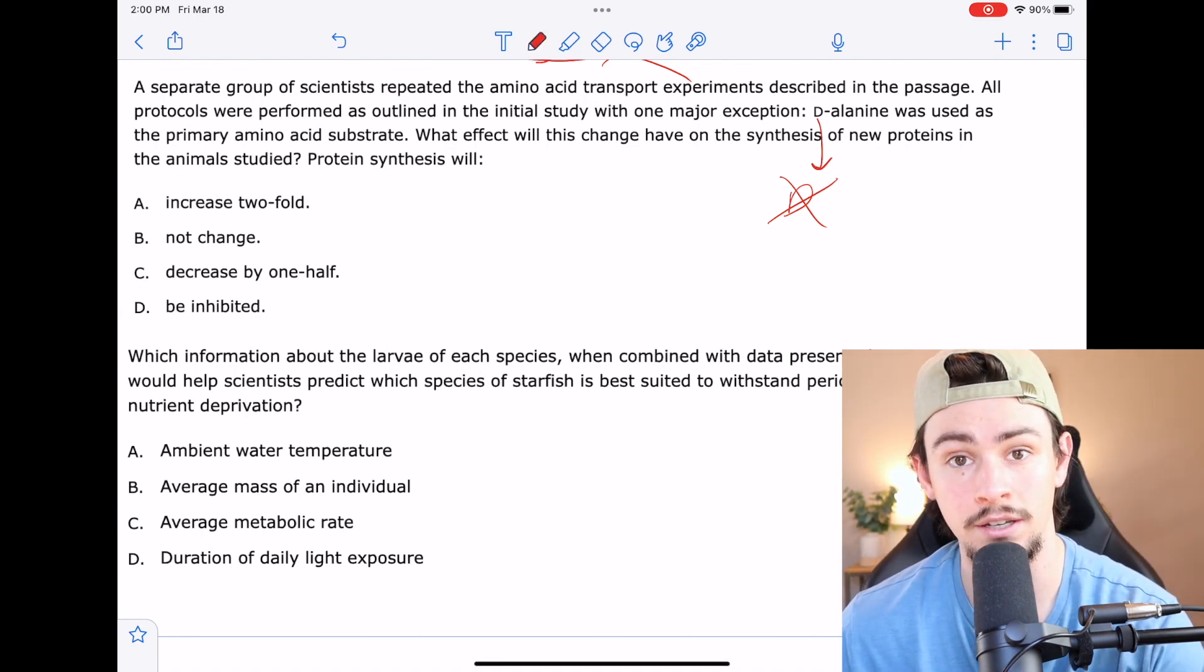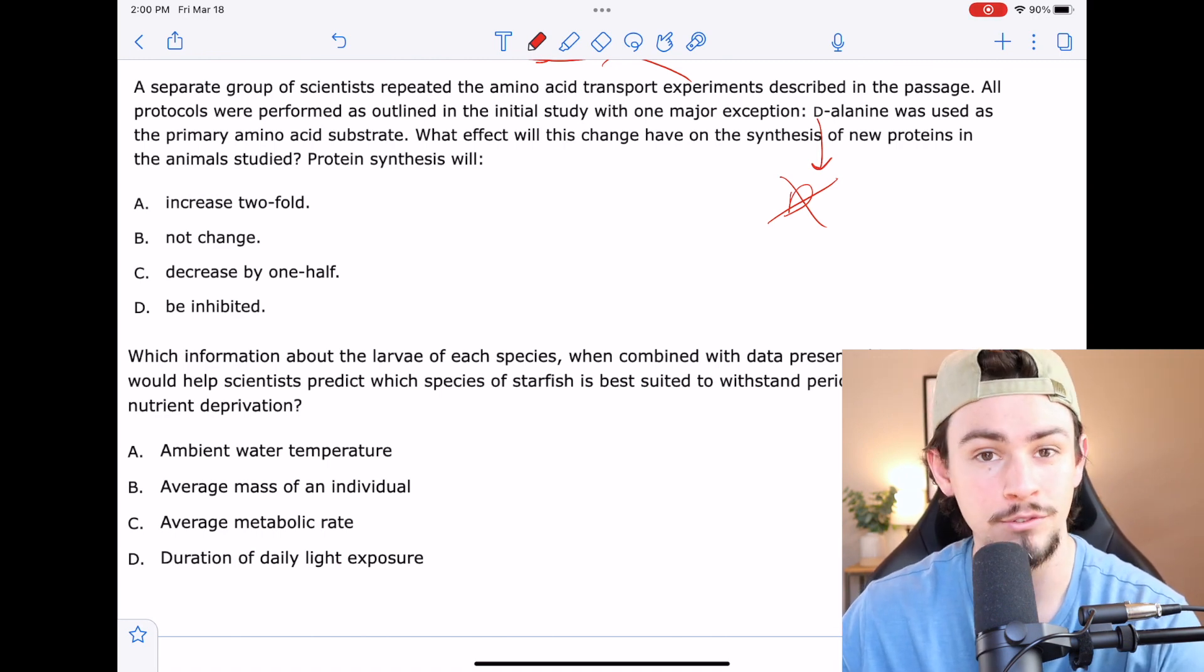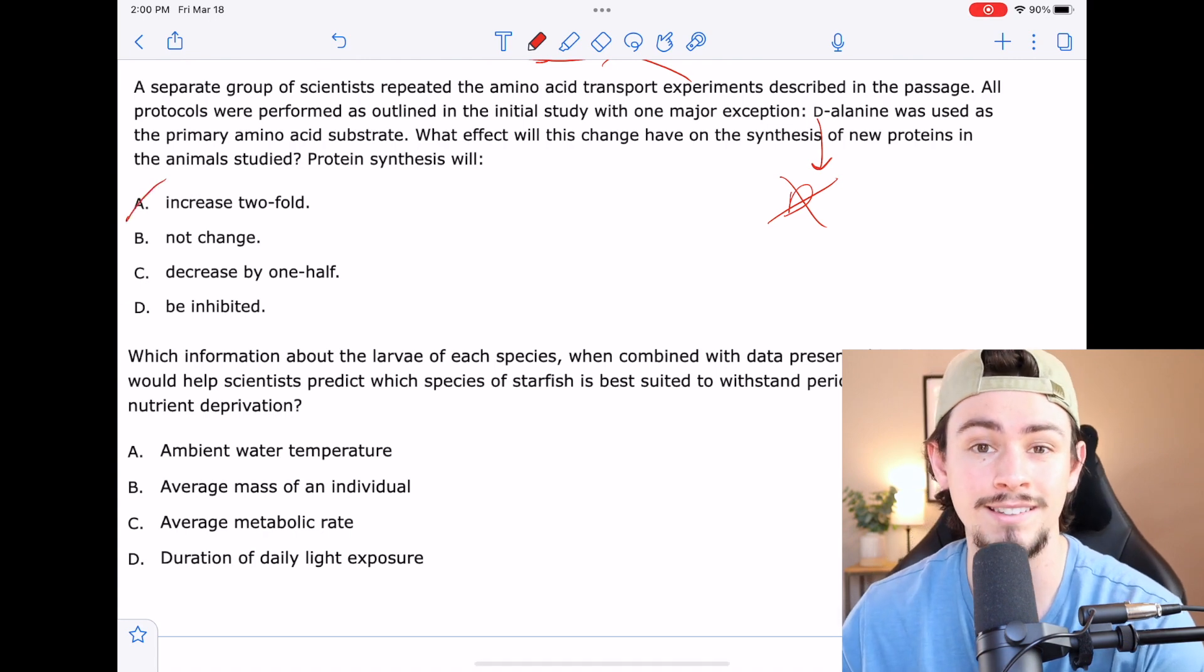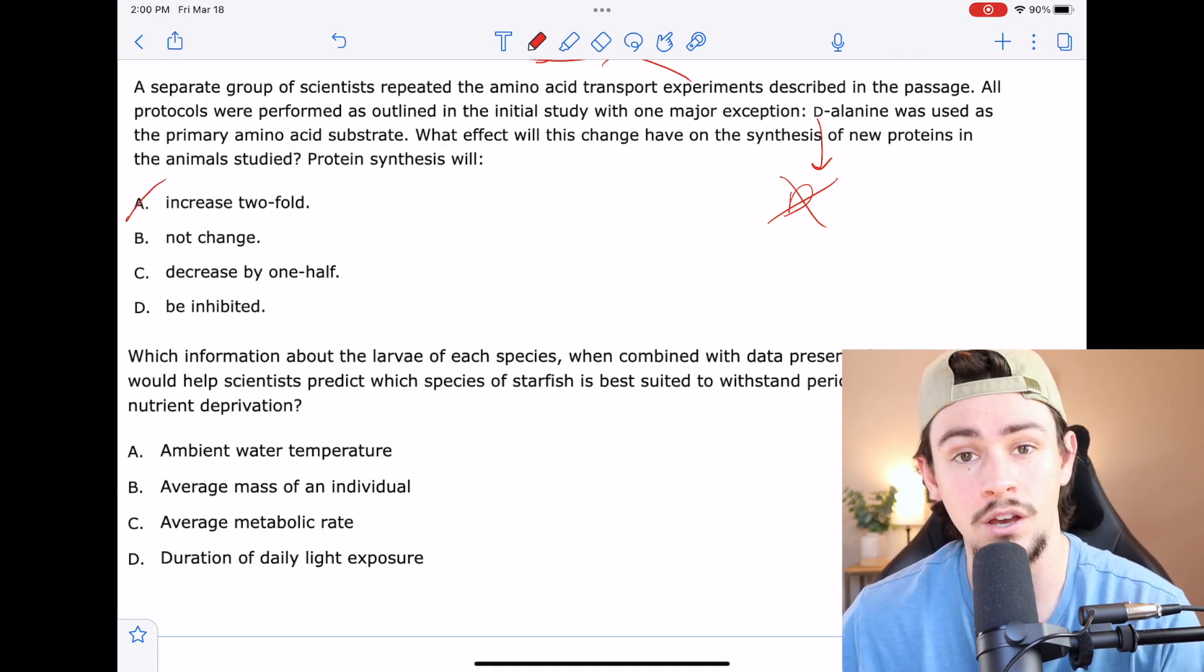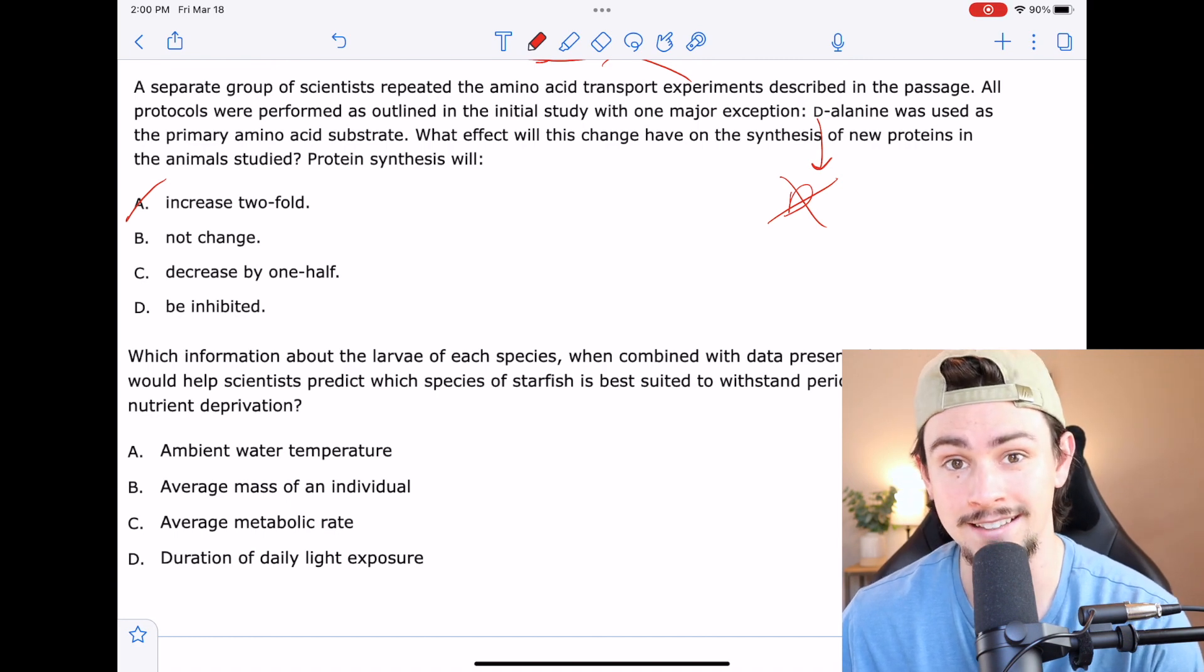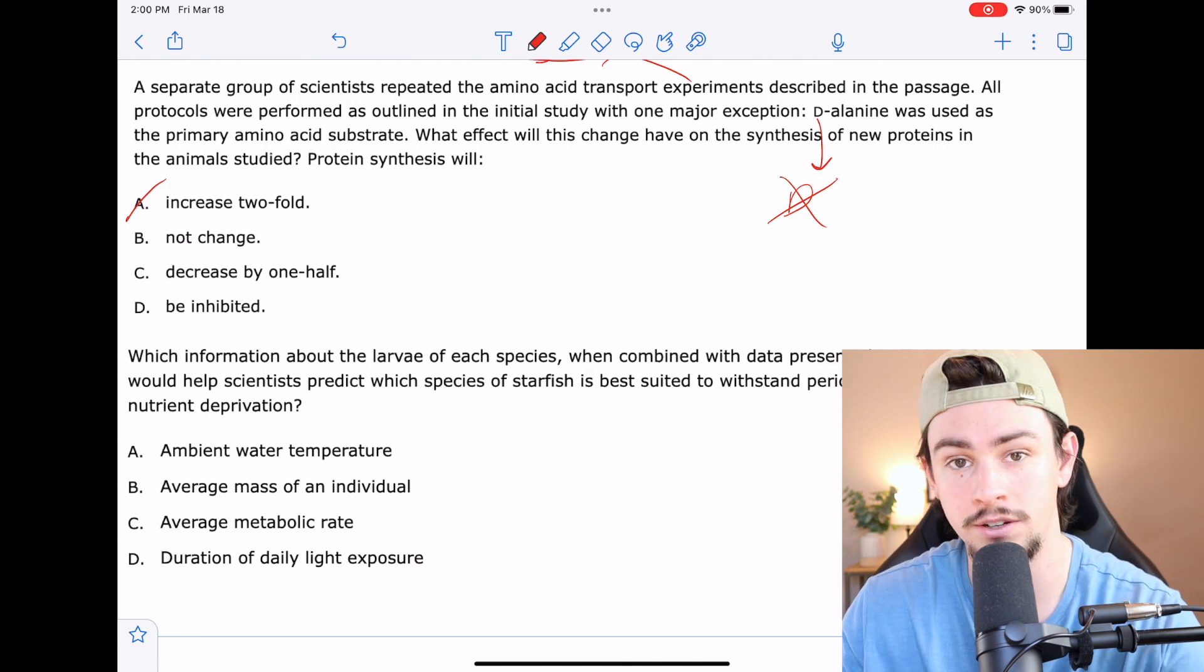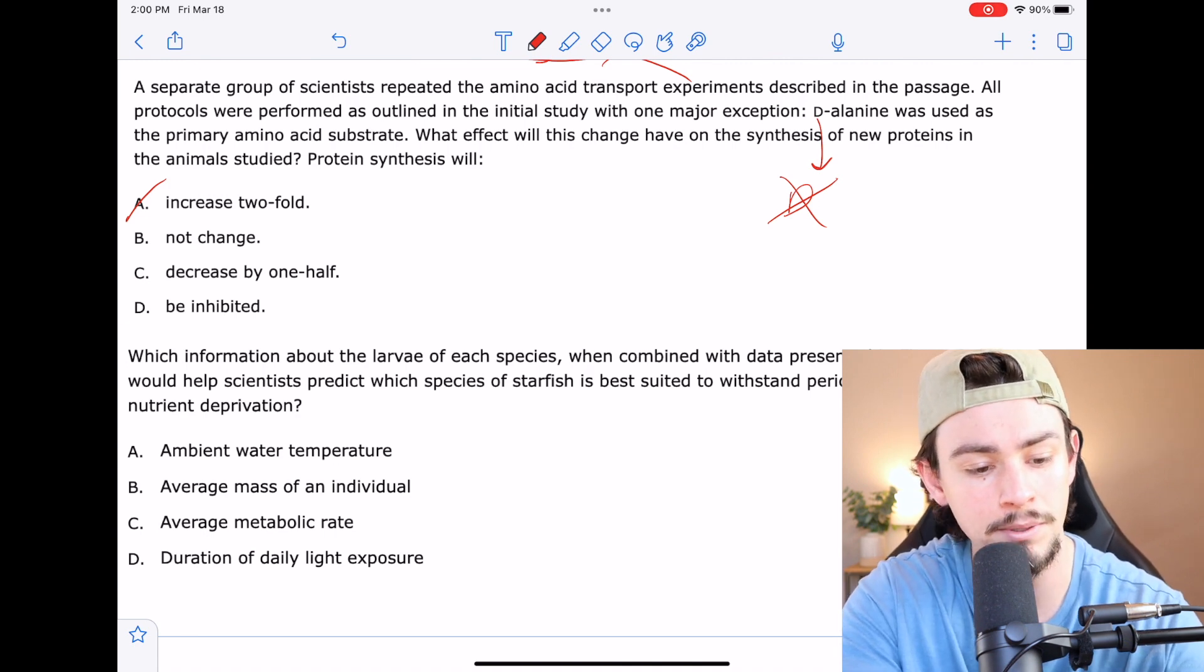Answer choice A says it would double. Well we can see that inhibiting protein production would not double it. So maybe not A. B says that it's not going to change. Well it's obviously going to change because our enzymes are stereospecific. Now if they mention that this organism's enzymes could handle either stereoisomer, then B would be the correct answer. But they don't say that. So I'll say maybe not B.